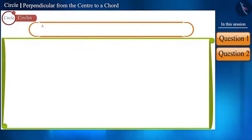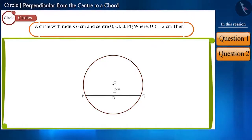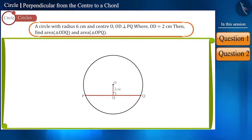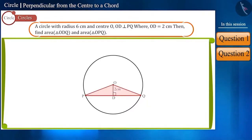Let's move ahead and solve our next question. A circle with radius 6 cm and center O has a perpendicular OD drawn on chord PQ, where the length of OD is 2 cm. Now, find the area of triangle ODQ and triangle OPQ.